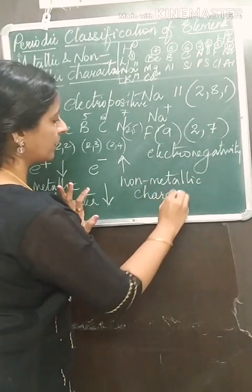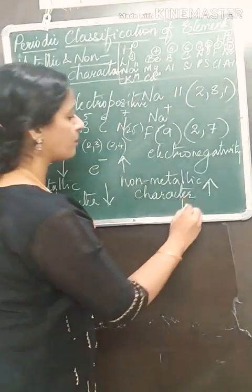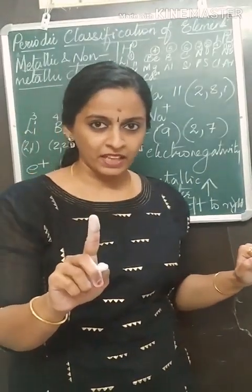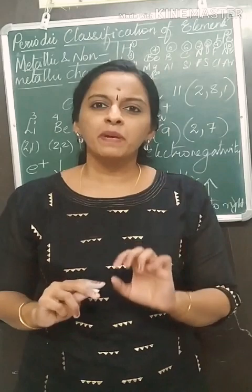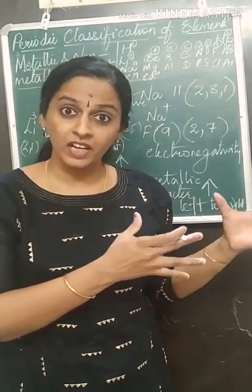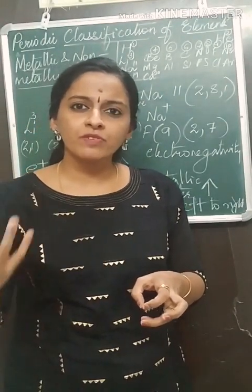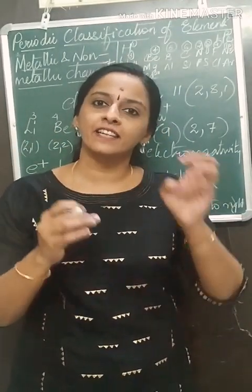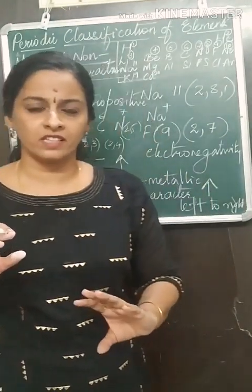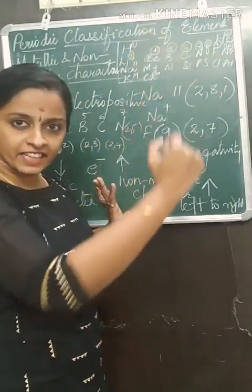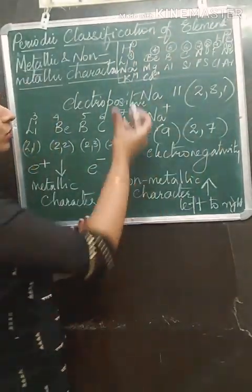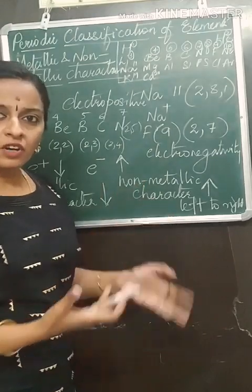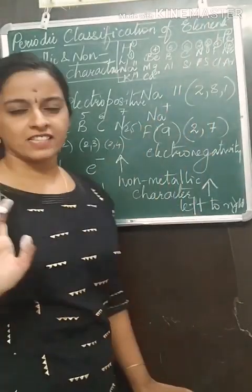As you go from left to right, non-metallic character increases. You can see that nitrogen, oxygen, and fluorine are all non-metals. The metallic character decreases as you move from left to right across a period, while non-metallic character increases.